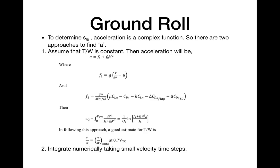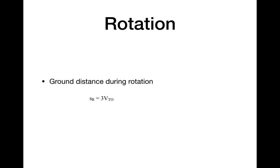A good estimation is obtained when T/W is evaluated at 0.7 times the takeoff velocity. The second approach integrates numerically over small velocity time steps where T/W is held constant. For spreadsheet calculations, the first approach is typically used. This concludes the first phase of takeoff: ground roll.